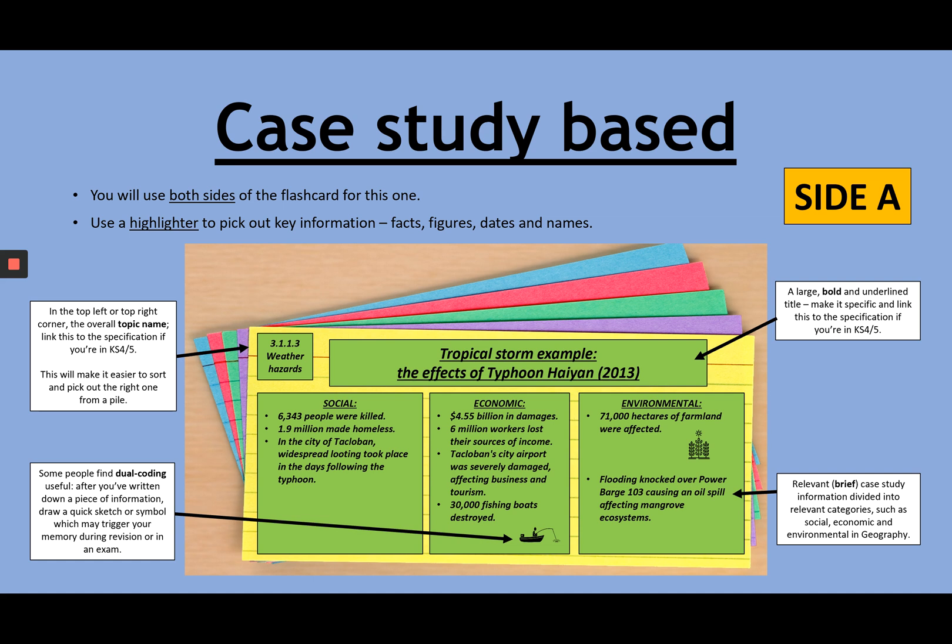Now, for the next two boxes, I'll just explain them using the actual context of this card. What I've done is I've split the effects of Typhoon Haiyan into social, economic, and environmental, which are three very useful lenses through which we can view knowledge in geography, and I'm sure you've been using them all the way since the start of Year 7.